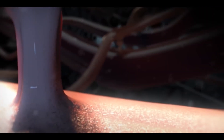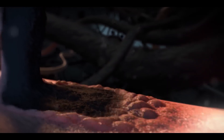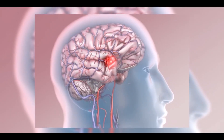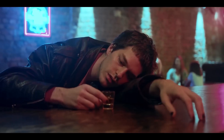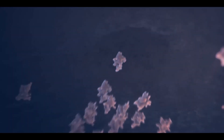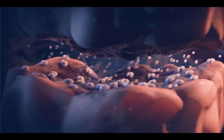Brain: Alcohol constricts brain tissue, increasing the risk of bleeding and blood clot formation. It affects brain functions such as speech, balance, judgment, and memory by altering dopamine and serotonin secretion.